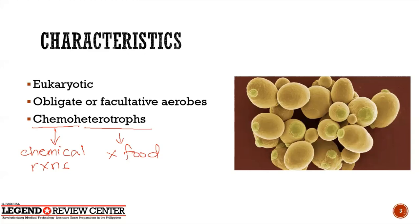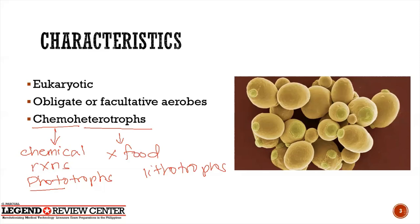This is in contrast to phototrophs, which derive their energy from sunlight in the process of photosynthesis, like plants. The opposite term of heterotroph is lithotroph — organisms capable of producing their own food by getting carbon from inorganic sources like, for example, carbon dioxide.